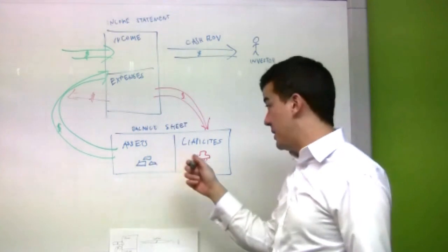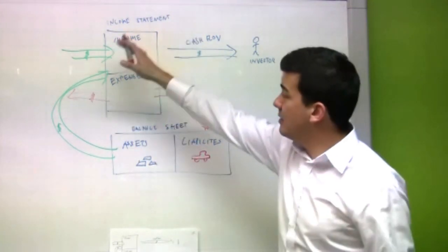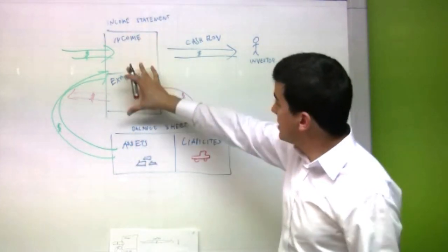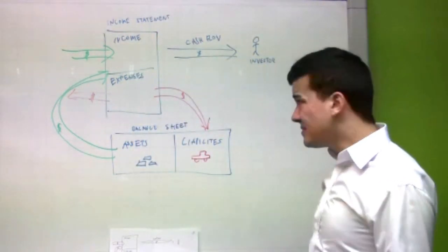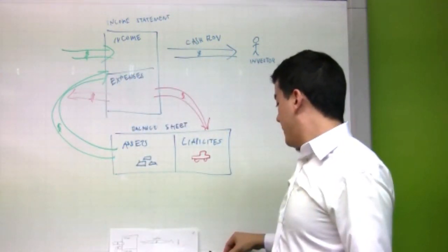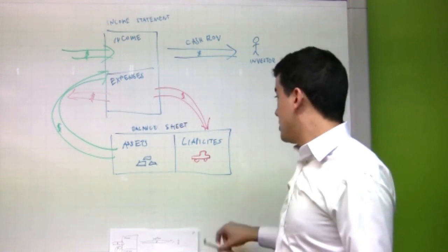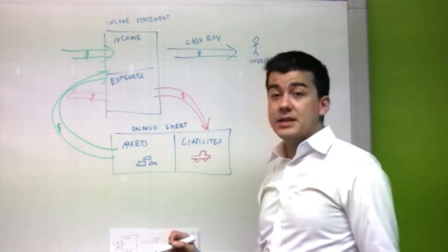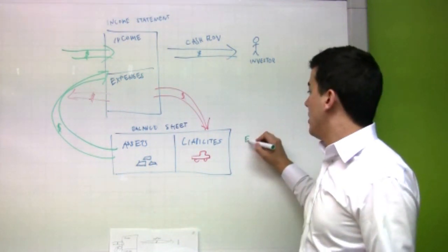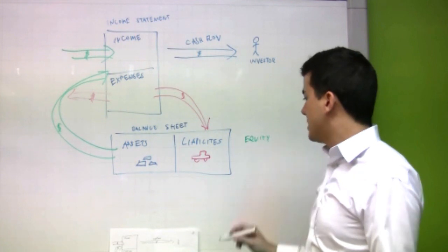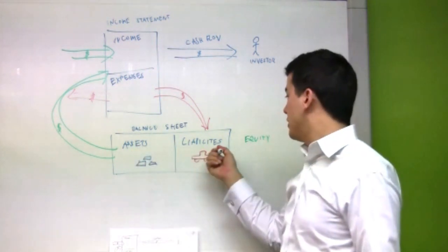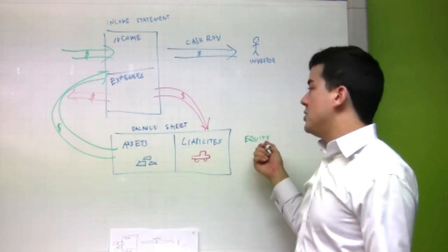So, assets are good, liabilities are bad when you're looking at this interaction. Now, obviously, when these interact, cash flow will be affected. And they're all interrelated. But, as I alluded to before, what an investor is also interested in is capital gains. So, what is capital gains? To measure capital gains, we must measure equity. What is equity? Equity is simply the value of your assets minus the value of your liabilities. And whatever is left is your equity.